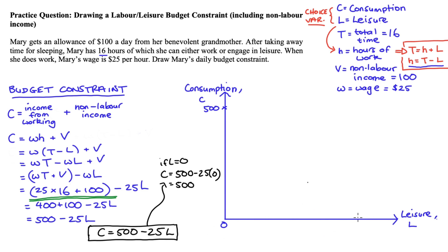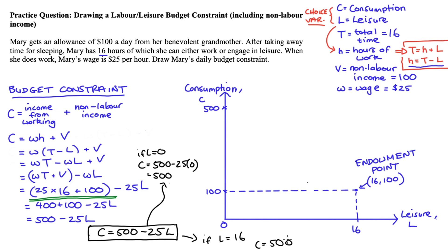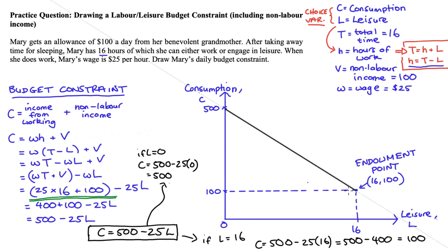Turning to the horizontal axis: at most Mary can engage in 16 hours of leisure, so I'll mark that there. At that point, Mary's consumption equals 100 — just the income from grandma. This point, where L equals 16 and C equals 100, is what we call Mary's endowment point. We can confirm this algebraically: substituting L equals 16 into our equation gives 100. Since L equals 16 is the maximum leisure possible, the budget constraint ends abruptly here — it has a downward-sloping section and then a perfectly vertical drop at L equals 16.